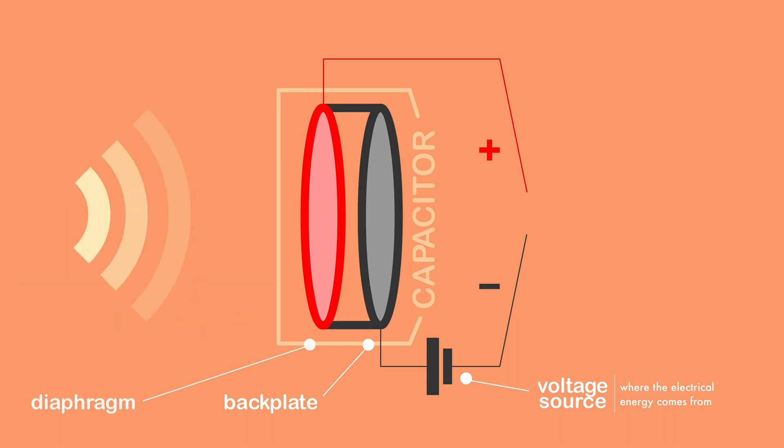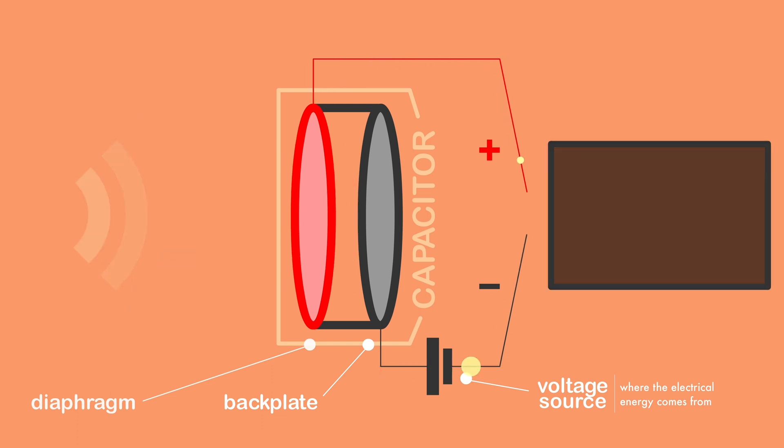As sound waves hit the diaphragm, it moves back and forth, changing its distance from the back plate, which in turn changes the circuit's output signal.